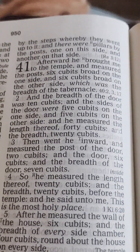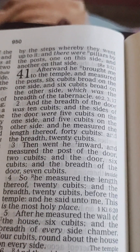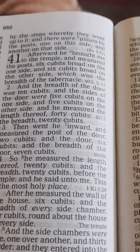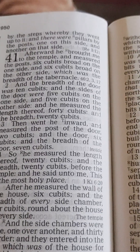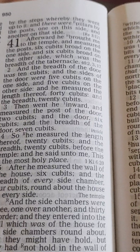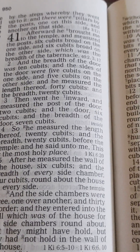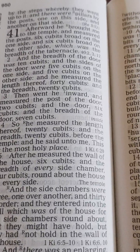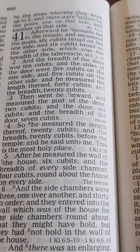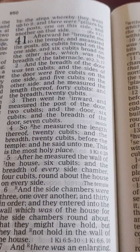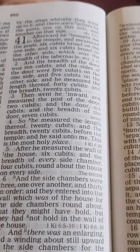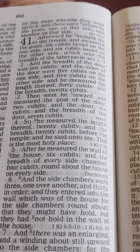A marvelous Bible lesson taken from Ezekiel chapter 41. Afterward, he brought me to the temple and measured the posts: six cubits broad on the one side and six cubits broad on the other side, which was the breadth of the tabernacle. And the breadth of the door was ten cubits, and the sides of the door were five cubits on the one side and five cubits on the other side.